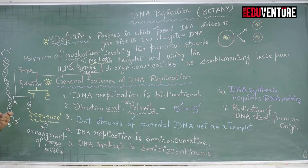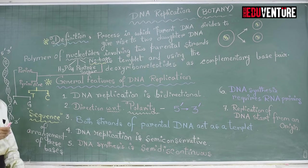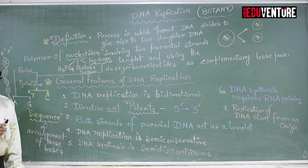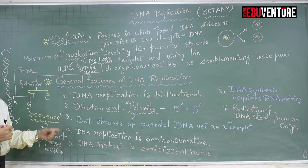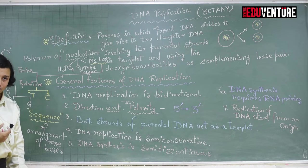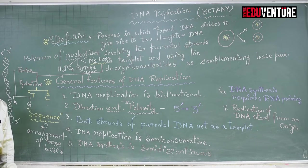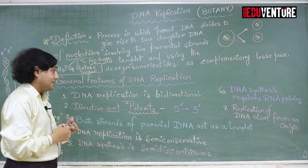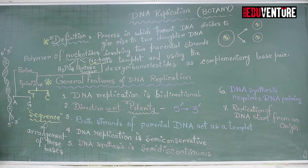DNA replication is a very essential criterion in molecular biology and molecular inheritance, in order to transmit parental characteristics to the next generation. Now let us discuss the general features of DNA replication. Feature number one: DNA replication is bidirectional. DNA is a two-stranded structure and during the time of replication both strands participate.